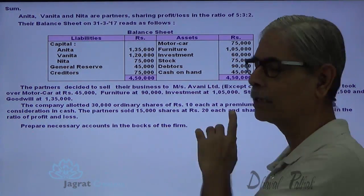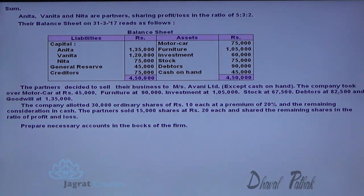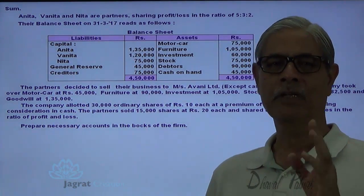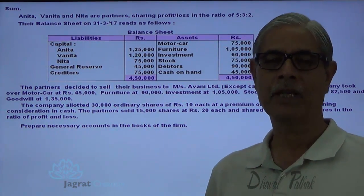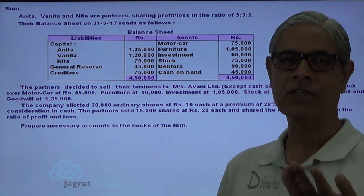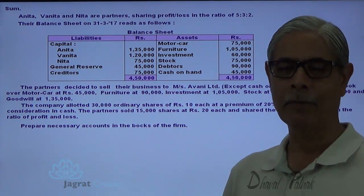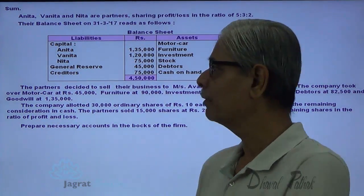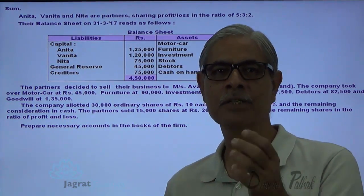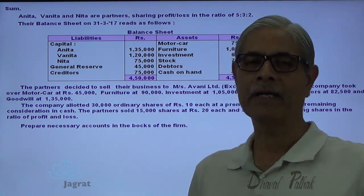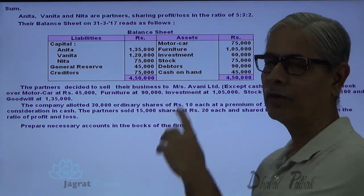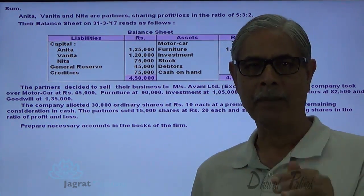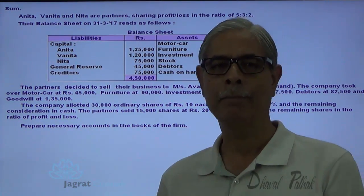We are required to prepare necessary accounts in the books of the firm: realization account, partners' capital account, cash account, and shares received from company account. Before we start preparing these accounts, we should find out the purchase consideration received in cash — the amount received in cash against the purchase consideration that we need to work out. We find the purchase price on the basis of net assets.